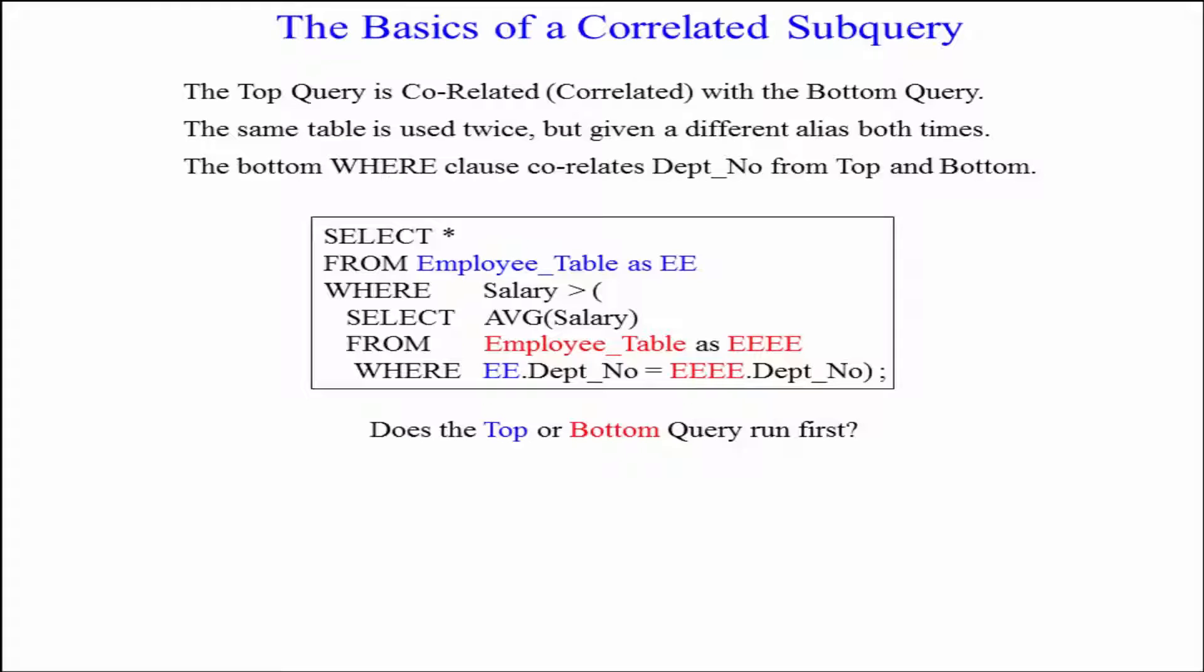So that's how I want you to recognize what a correlated subquery is. Same table twice, using different alias and tying it all together at the very bottom where clause. Now, which query runs first? The top or the bottom?